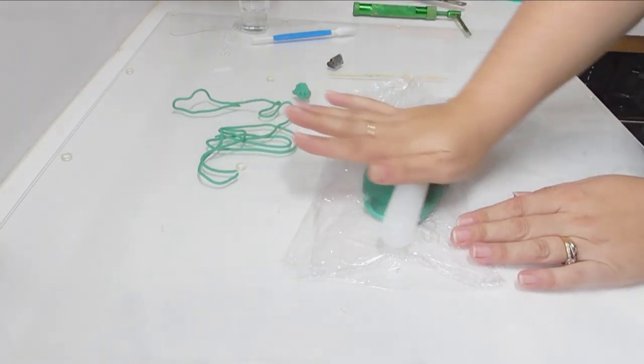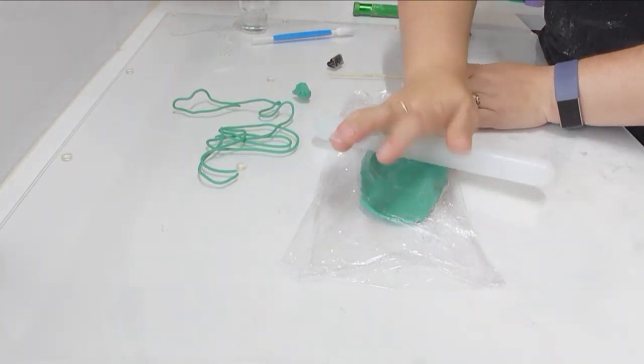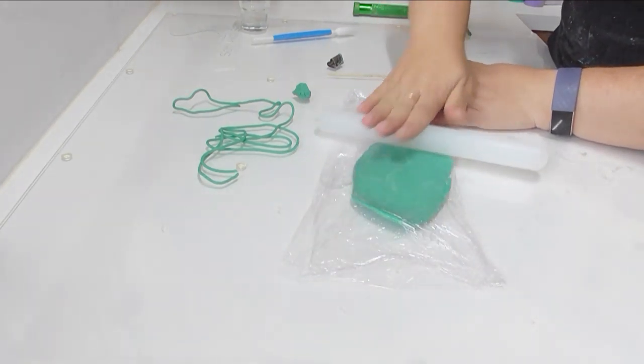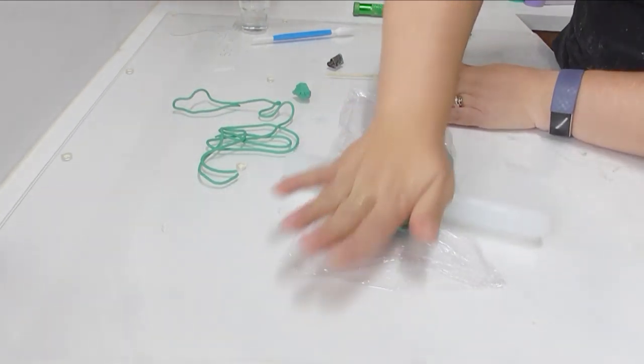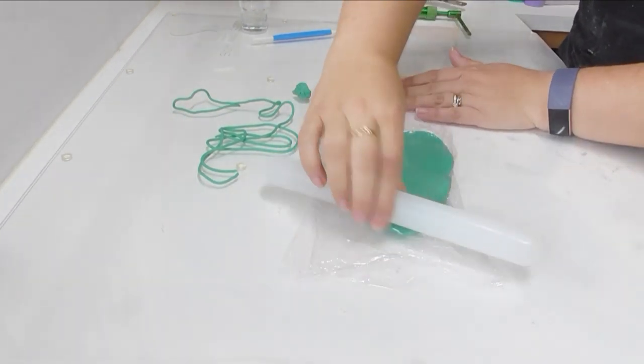I like to do it between the two pieces of film so that it doesn't stick to my workbench and if I do try actually rolling this on the greaseproof paper it just slips and slides everywhere. This is just nice and easy and gives you lots of control over the soap dough as well.